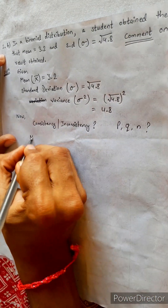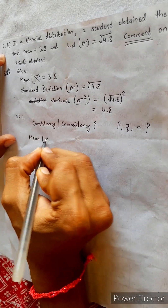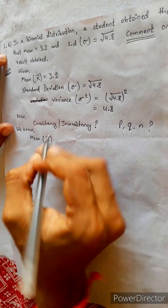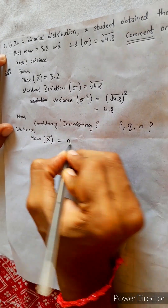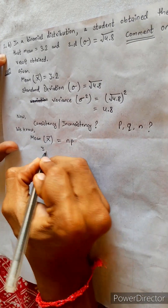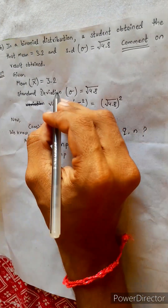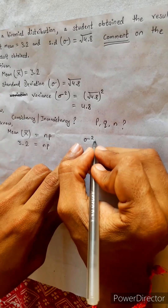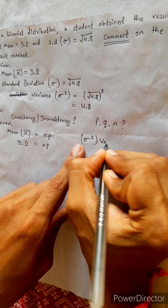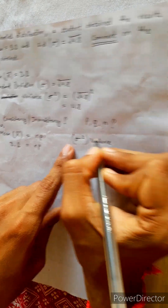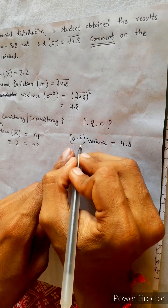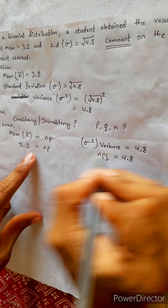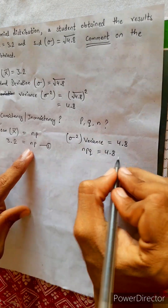To find P, Q, N, the formula for mean: X bar equals NP. So 3.2 equals NP — this is equation 1. Then variance sigma square equals 4.8, and it also has formula NPQ, so NPQ equals 4.8 — this is equation 2.